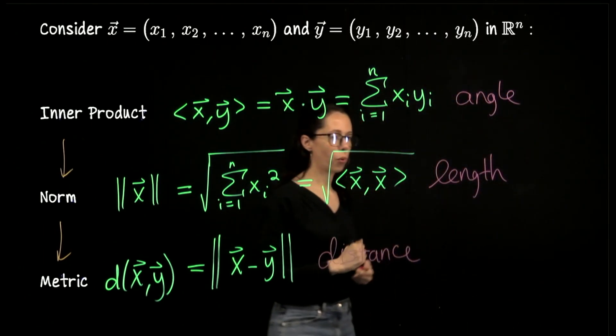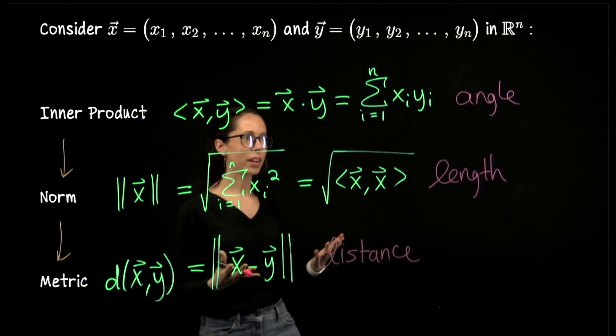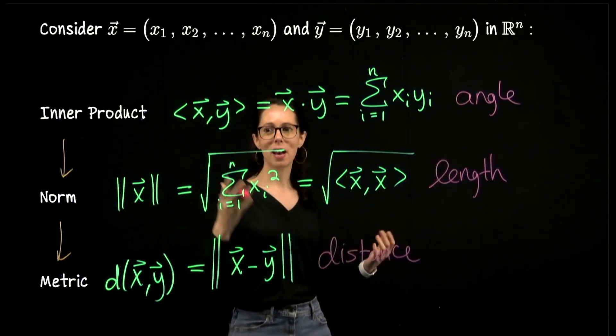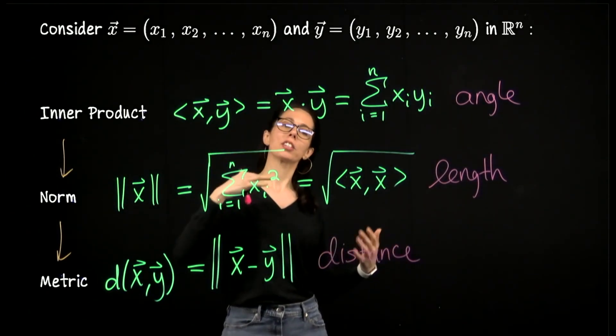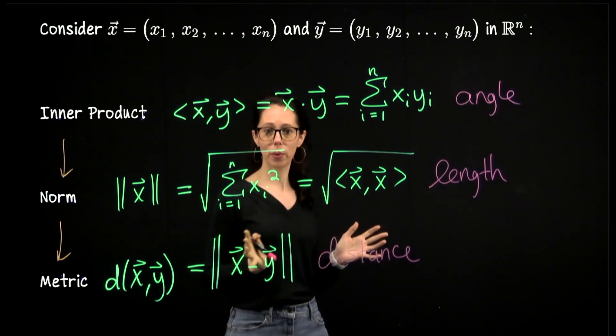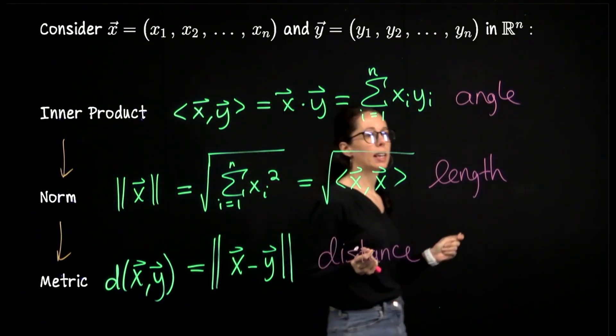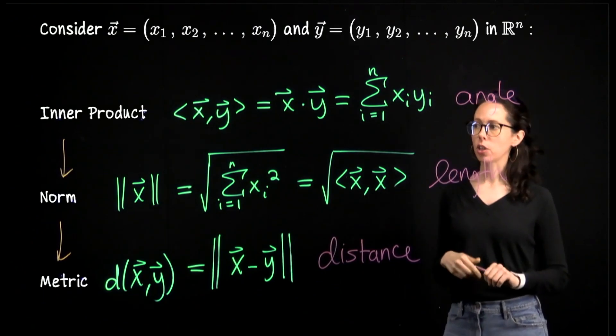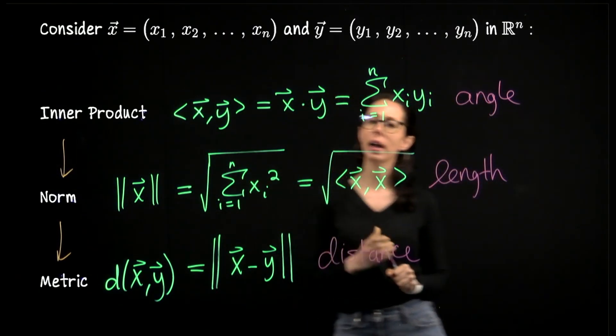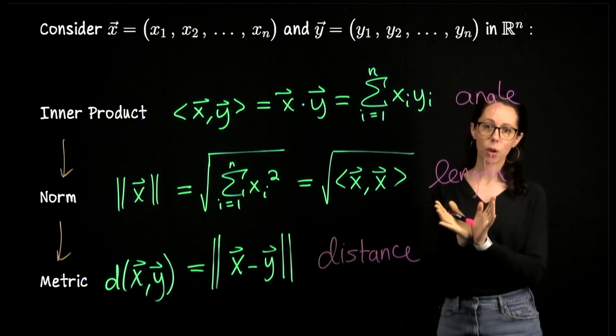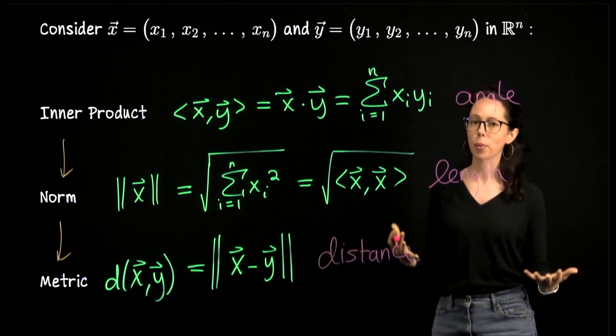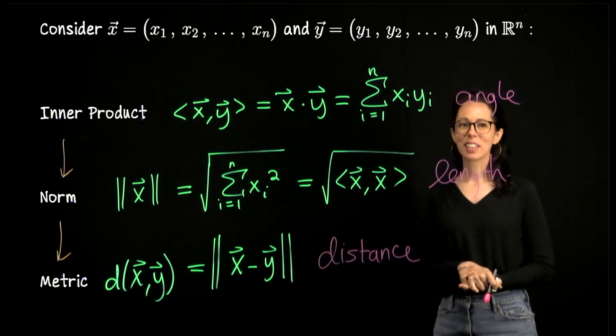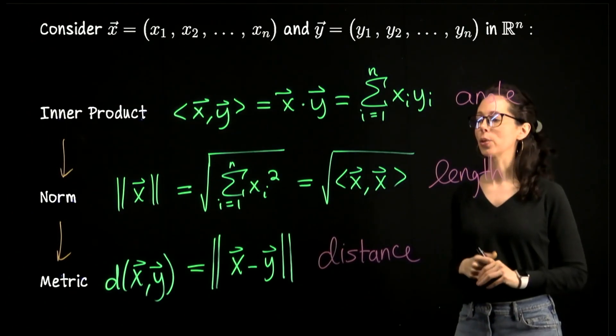So if you recall, for R^n, there's this formula with the inner product of two vectors and it gives us a way to figure out the angle that they open up between them. Most importantly is when they are perpendicular. So if we compute that the inner product of x and y is zero, that means that they open up a 90 degree angle with them, or maybe one of them was zero. But interestingly, we can figure out when they're perpendicular to each other.